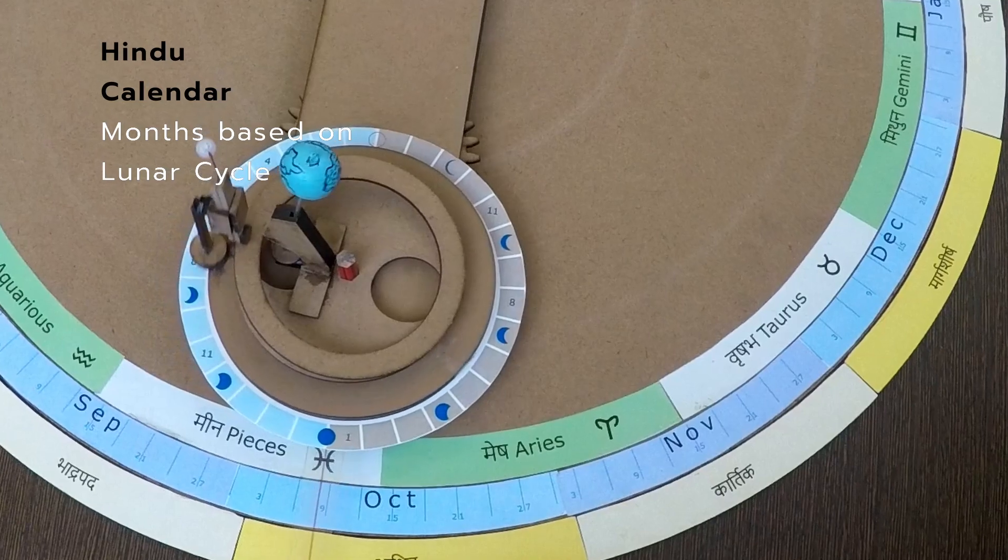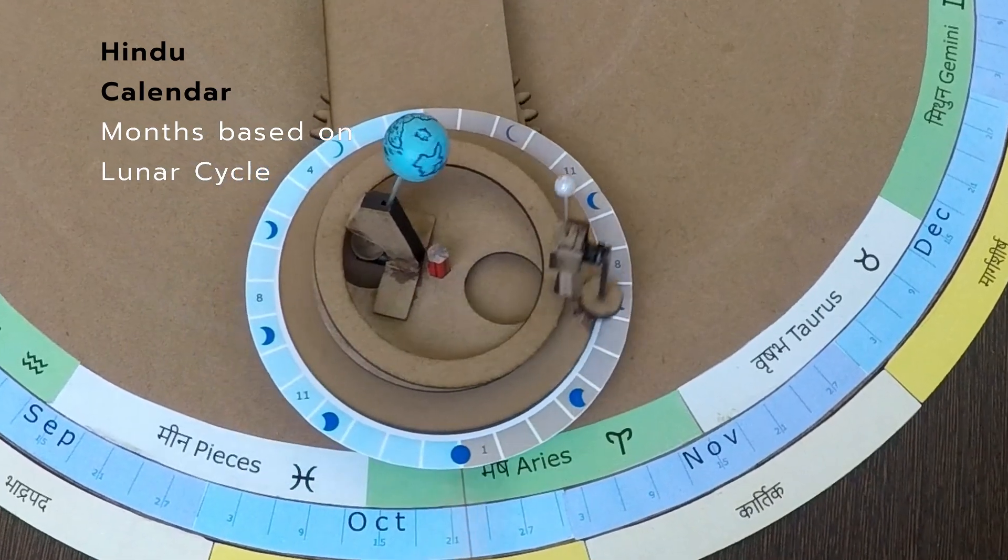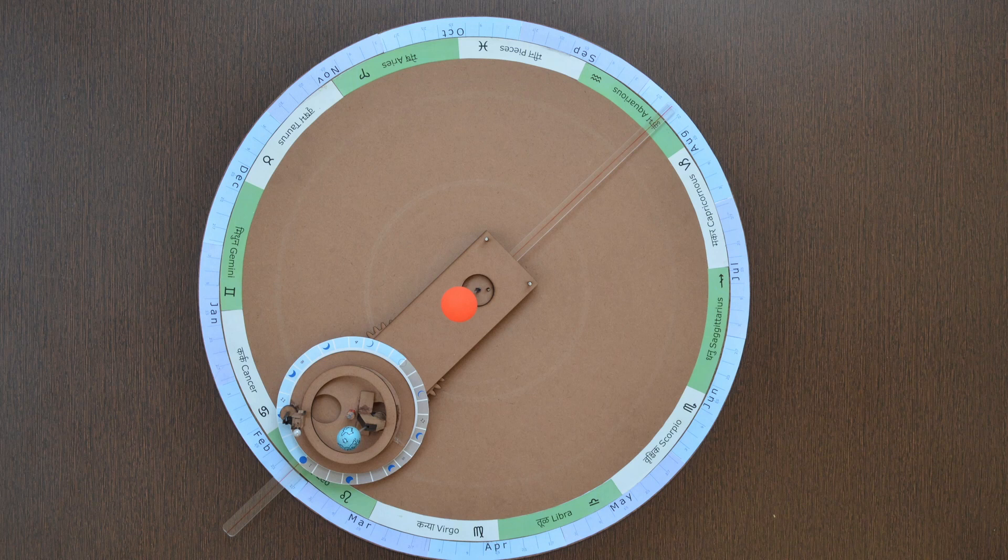Months in the Hindu calendar are based on cycles of the moon. On this dial, zodiac signs as per the Hindu calendar are named.